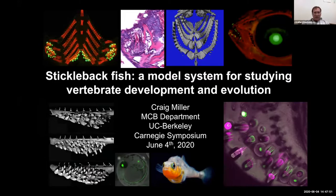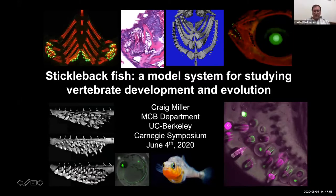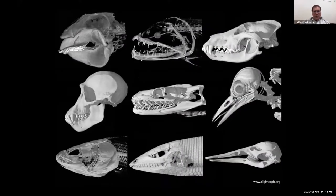I'd like to thank the organizers for the chance to tell you about our work. We're interested in two big questions. The first is the problem of development, or how the genome contains the information to make an animal. And the second is how that information changes over evolutionary time. We know a lot about the first question from model organisms like mice, zebrafish, and humans, but very little about how change arises in morphology.